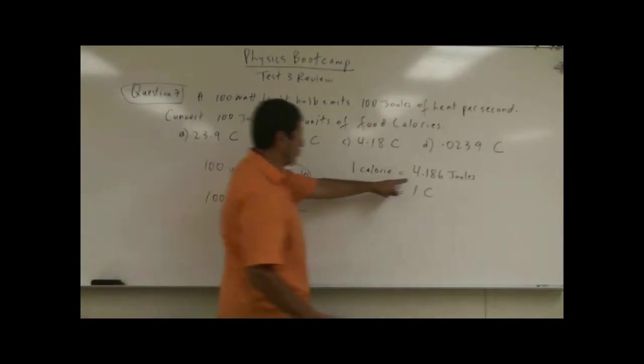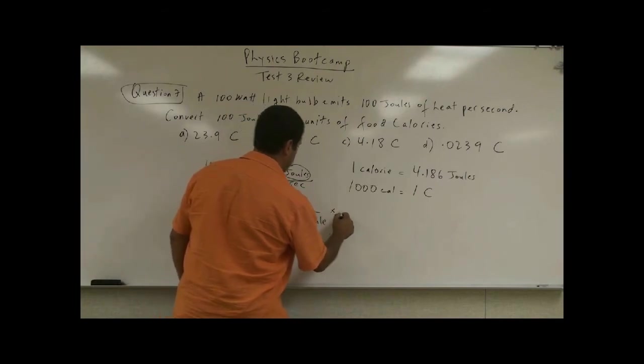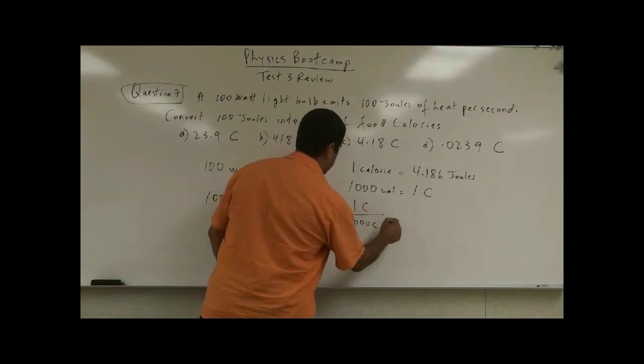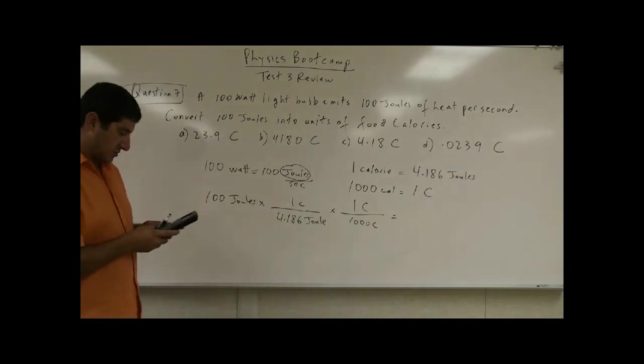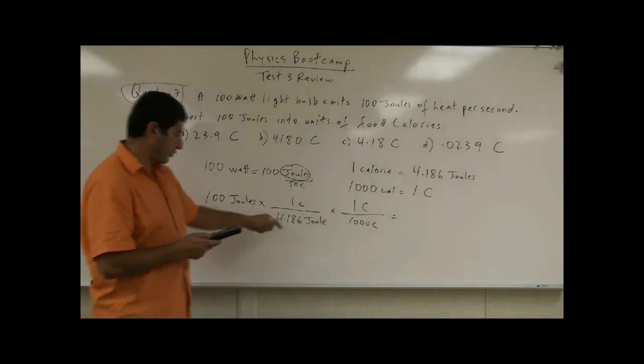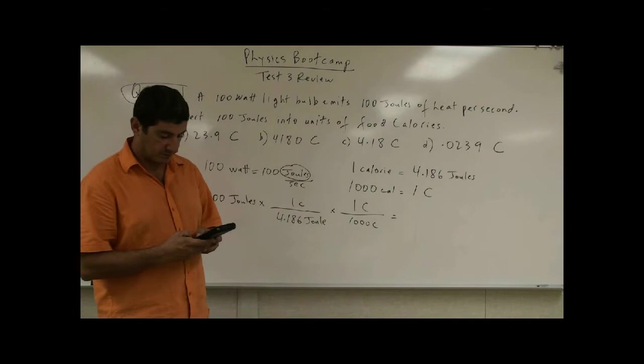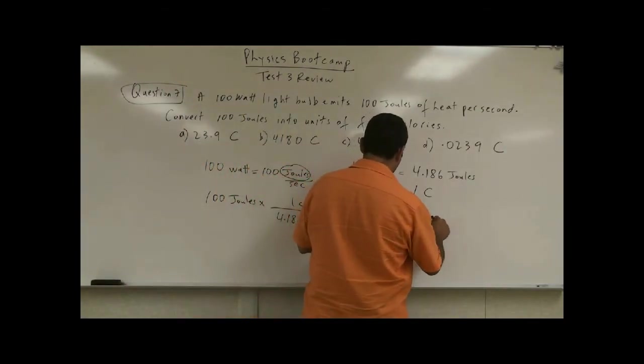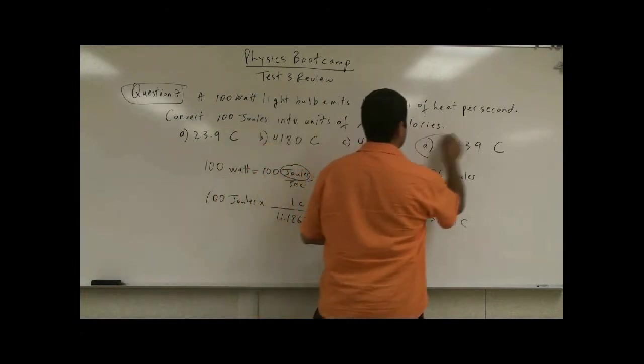So we know that 4.186 joule is 1,000 small calories is equal to 1 big calorie. So we take the calculator, divide a hundred by 4.186, and then also divide it by a thousand. And then we get 0.023889 food calories. So the answer is this.